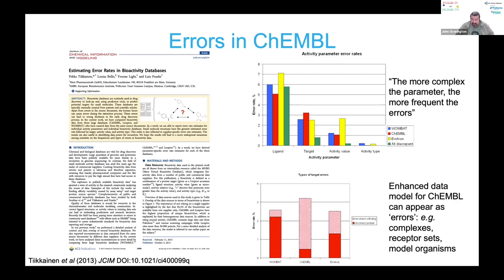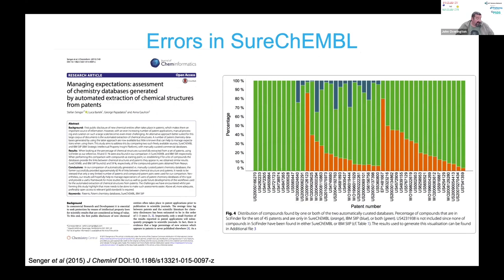Errors in SureChEMBL have a very different error structure, as you'd expect since it's computer-generated. The advances in text mining and natural language processing are really progressing, and the chemistry patent area is one of the real successful exemplars of capturing complex data from large-scale textual information. There are great commercial and public domain tools for this sort of text mining.